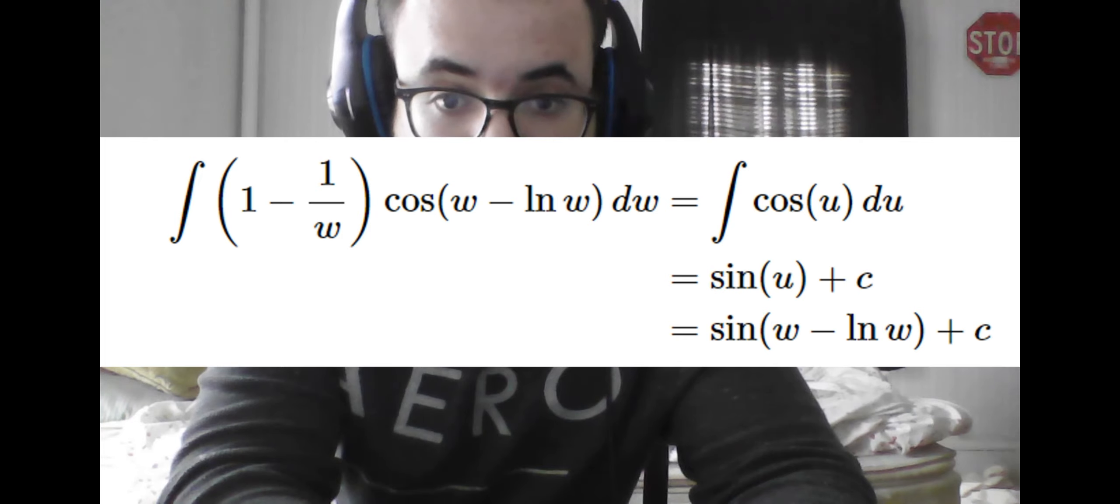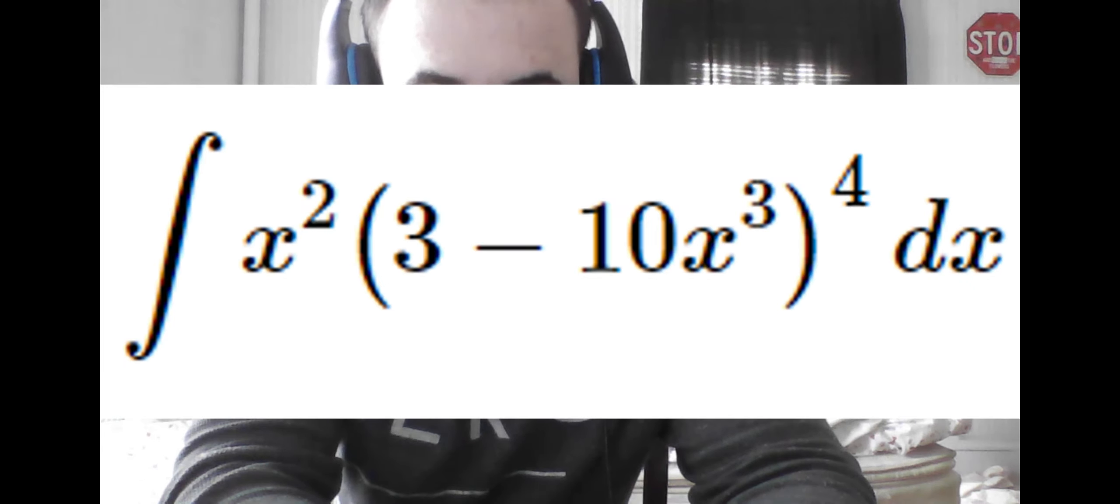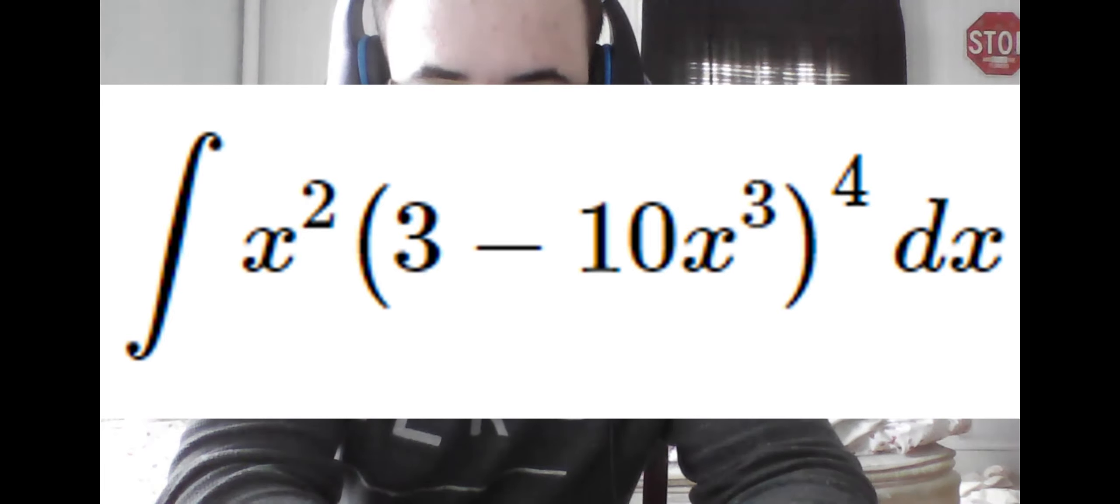Many basic integrals will not have the derivative given explicitly, but will require some algebraic rearranging first. For example, we would identify the u here as 3 minus 10x cubed. And so by the usual process, change in u must logically be negative 30 times x squared times change in x.